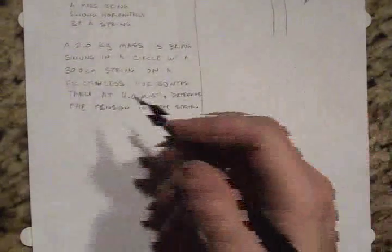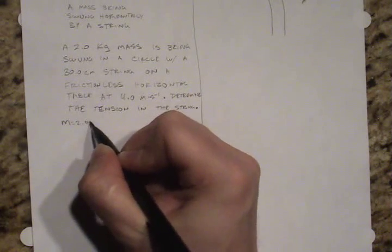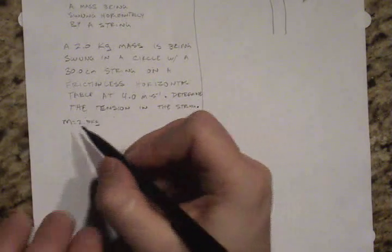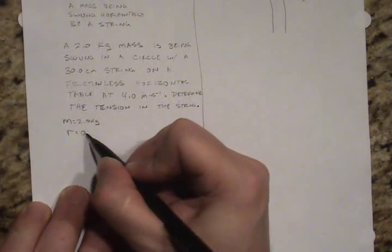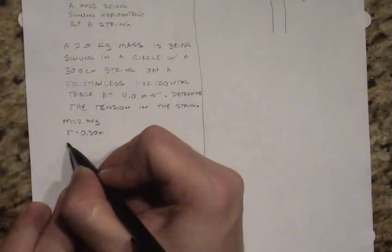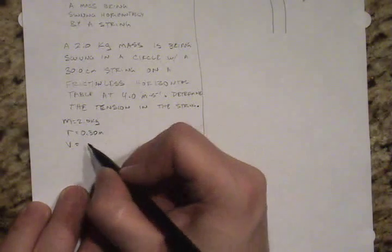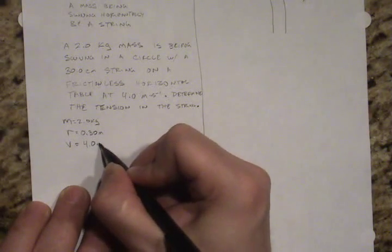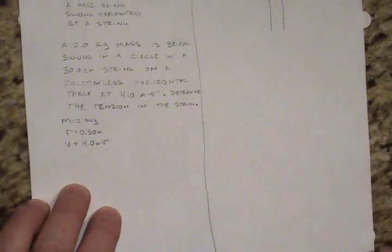Let's pull out everything that was given to us in this problem. We can see that we were given the mass, we were given the radius of its motion - I'm going to convert that right now to 0.30 meters - and I see that I have the velocity, 4.0 meters per second. So clearly I'll be using the v squared over r equation.